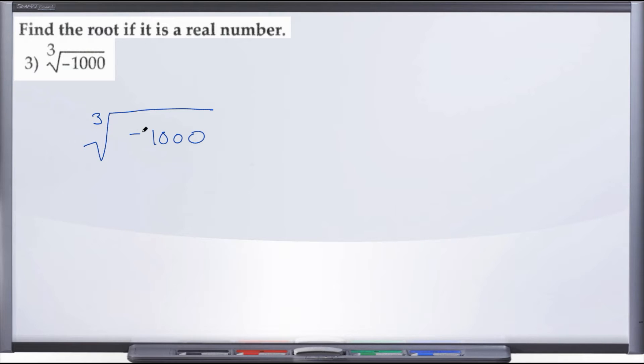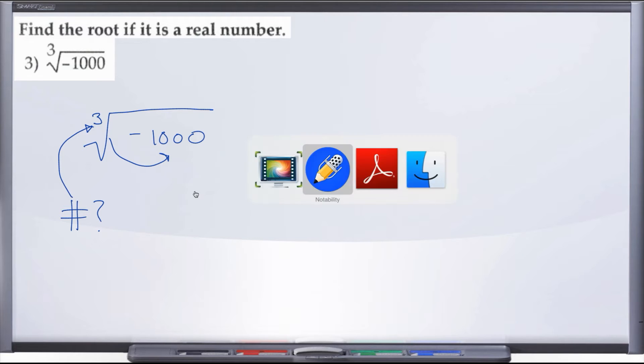This is asking us what number raised to the third power gives us negative 1,000. You can either use your calculator or utilize your chart.